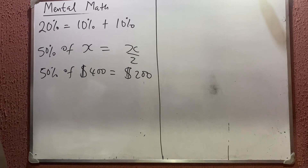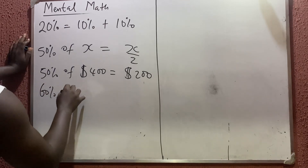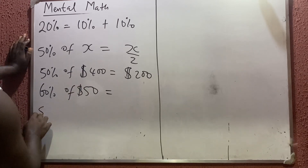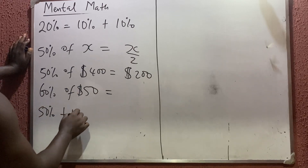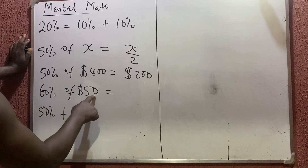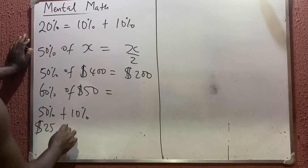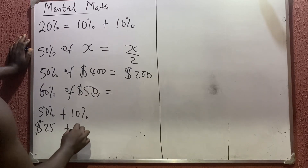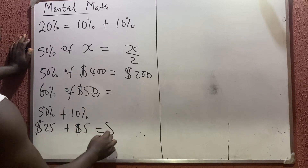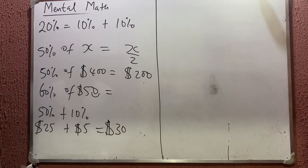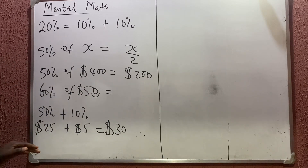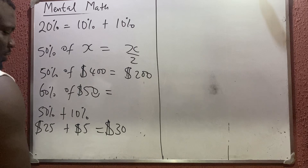So how do you get 60 percent? 60 percent of 50 dollars, for instance: 60 percent simply means 50 percent plus 10 percent. 50 percent means divide by two, giving us 25 dollars. The 10 percent means put the decimal point here and move one, giving 5 dollars. Add these two and you get 30 dollars. Seventy percent is the same — get 50 percent plus 20 percent; 80 percent, get 50 percent plus 30 percent. That is the easiest way to calculate percentage.